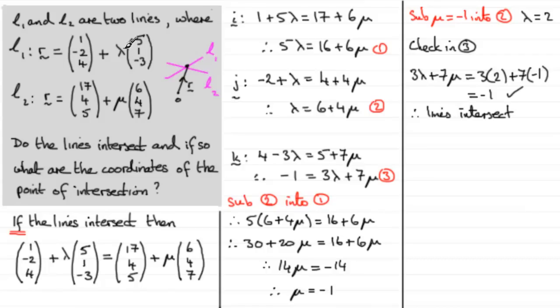But what I'm going to do is substitute, say, lambda equals 2 into equation L1. So, let's just write that down here, sub lambda equals 2 into L1. And what do we get? Well, we end up with r equaling, we've got the point on the line, 1 minus 2, 4. We've got 1 then, minus 2, 4. And then we've got plus lambda, lambda being 2, multiplied by the direction vector, 5, 1, minus 3.